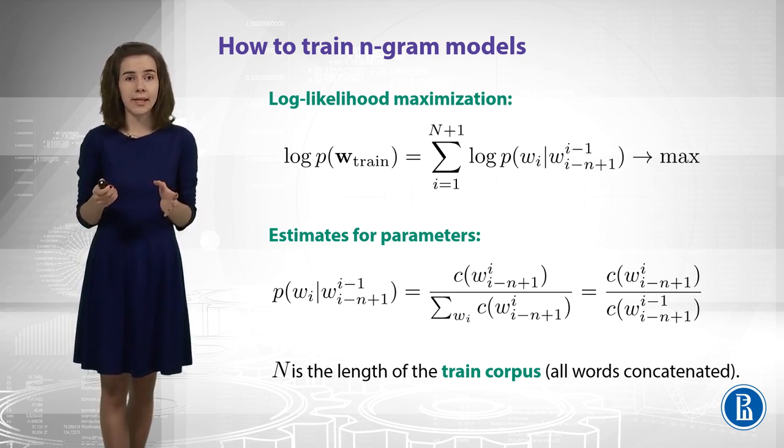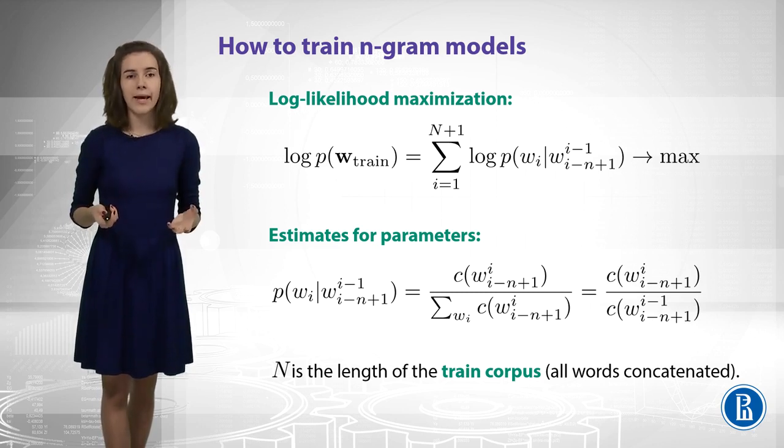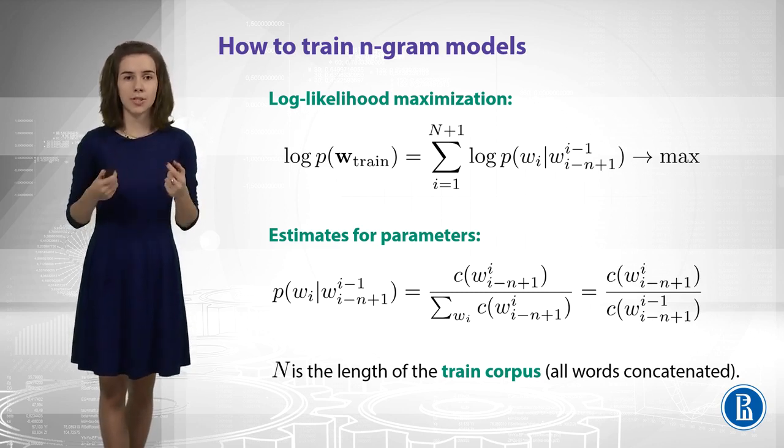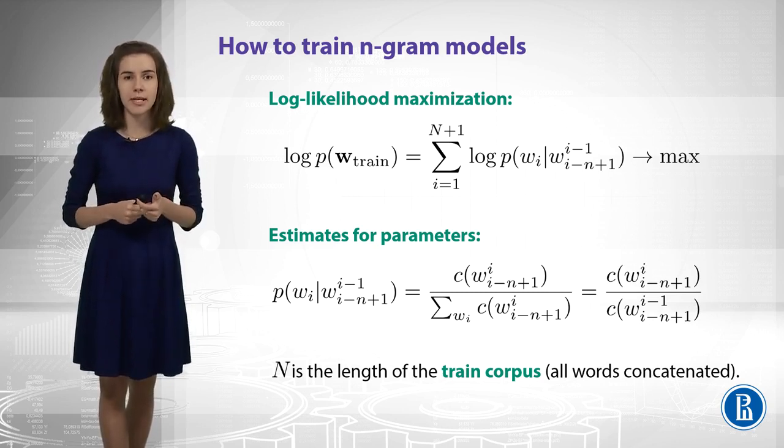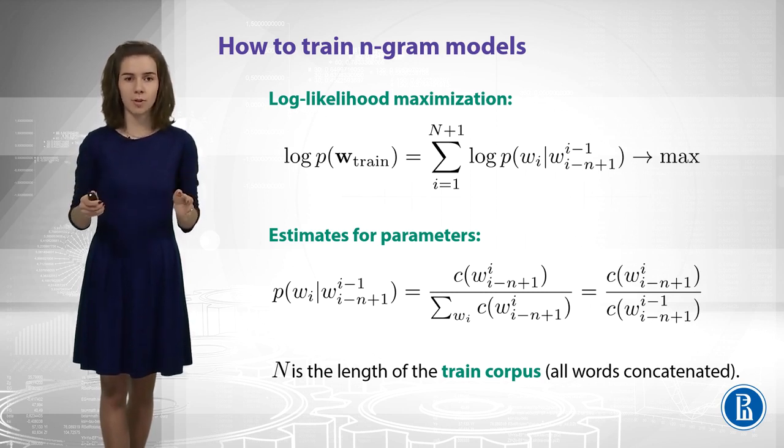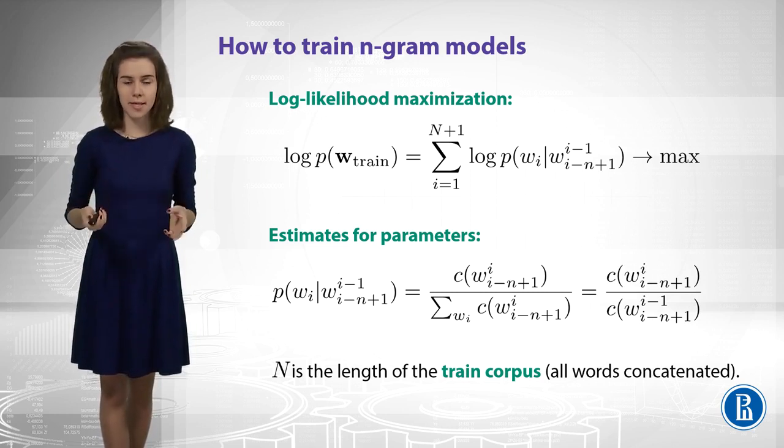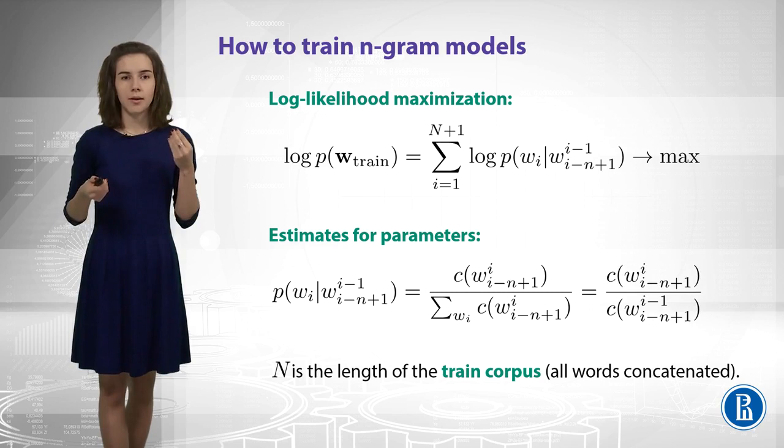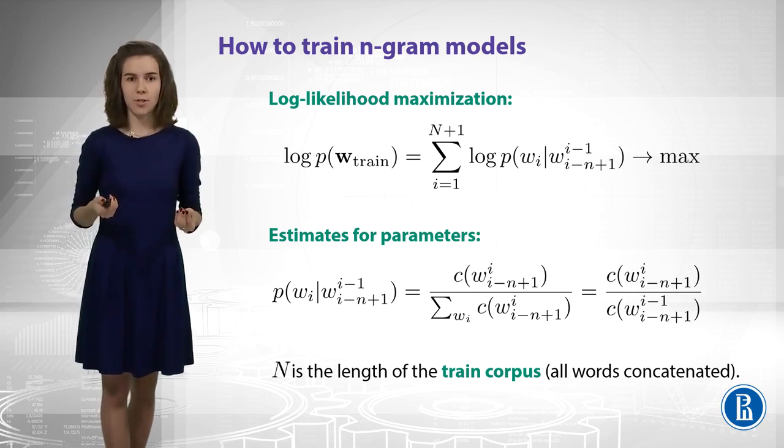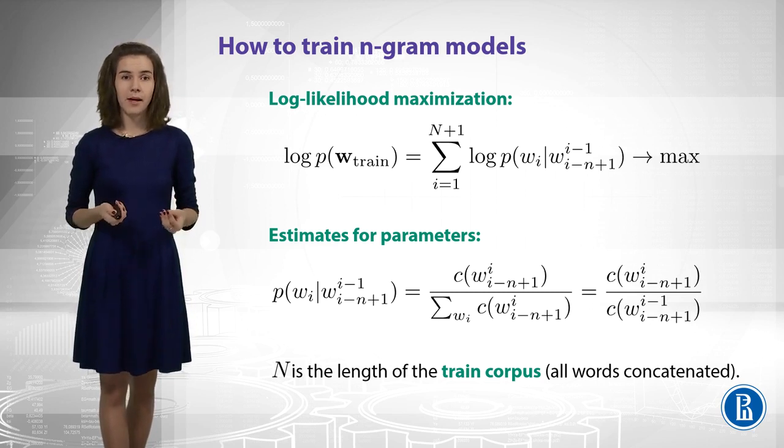So, if I am not too lazy, I would take the derivatives of this likelihood, and I would also think about constraints such as normalization and non-negativity of my parameters. And I would arrive to exactly these formulas that you see in the bottom of the slide. So these counts and normalization of these counts have mathematical justification, which is likelihood maximization. So this is just the likelihood maximization estimates.